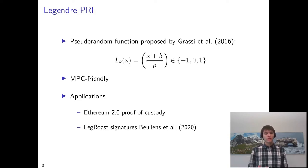More recently, at CCS 2016, Grassi et al. extended this to a pseudorandom function by defining this function as the Legendre symbol of the input plus a key k with respect to a fixed prime p.